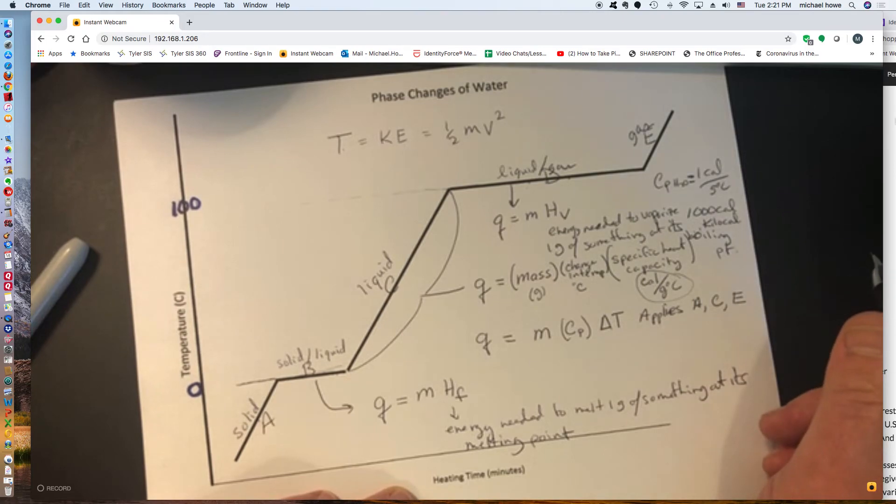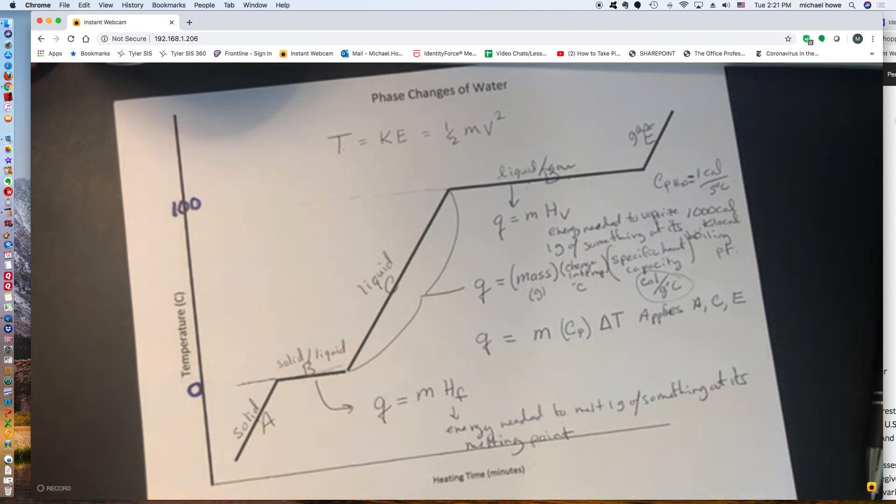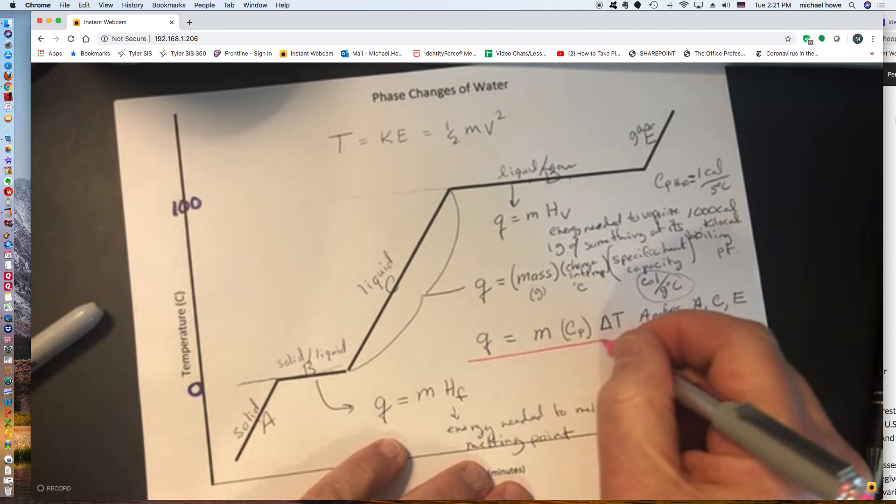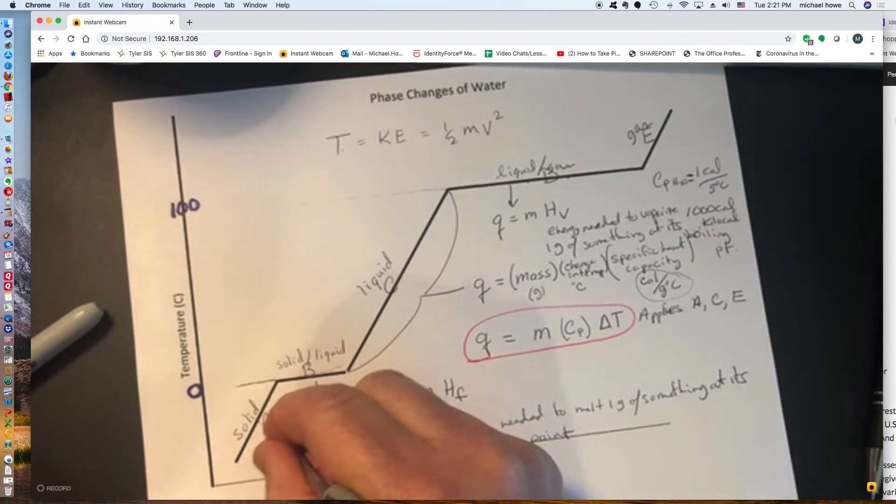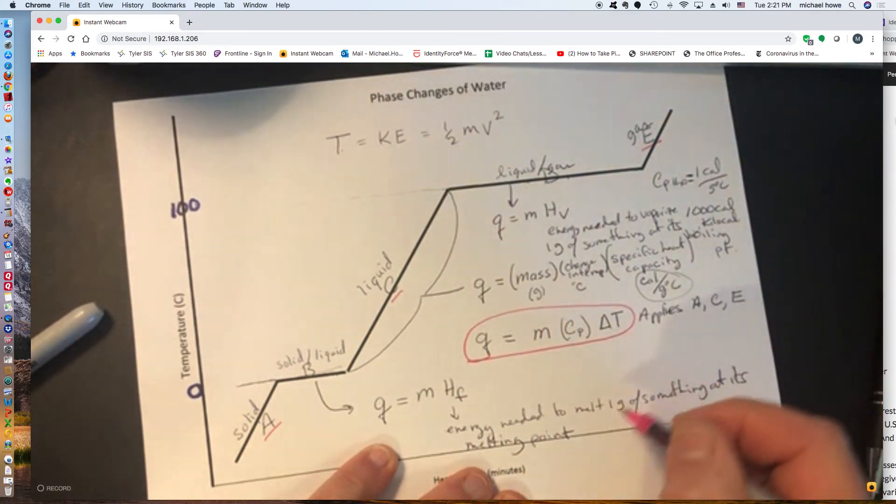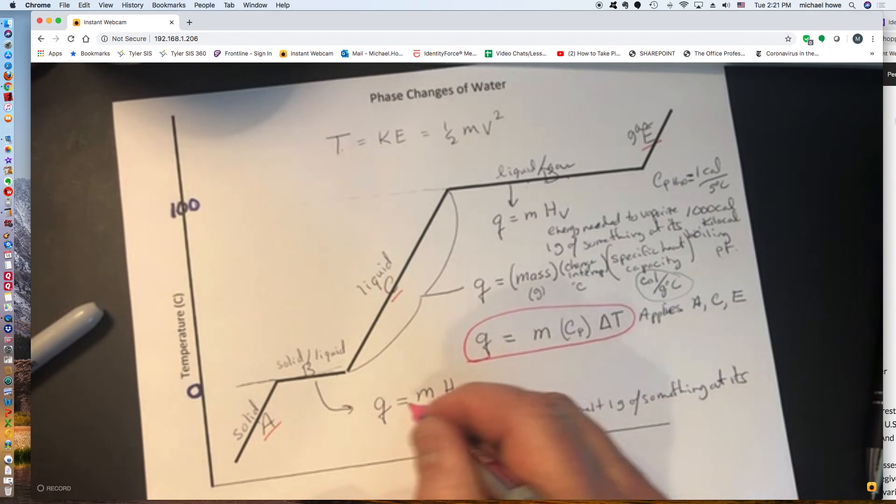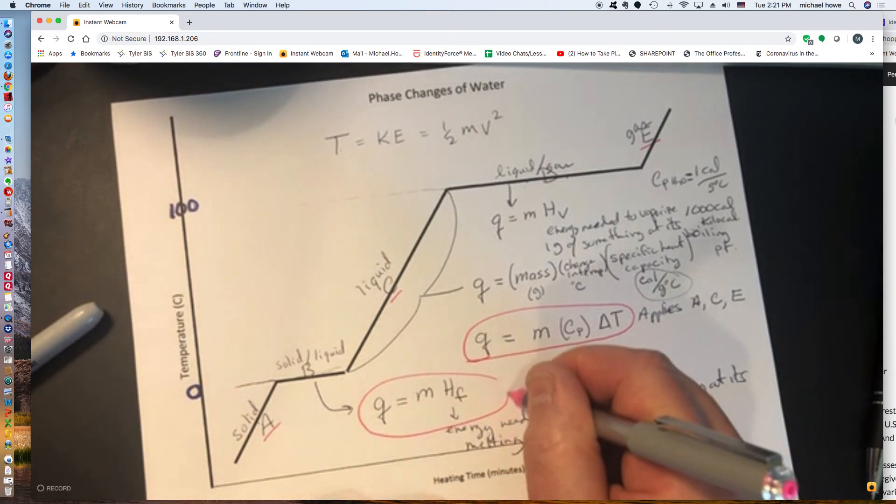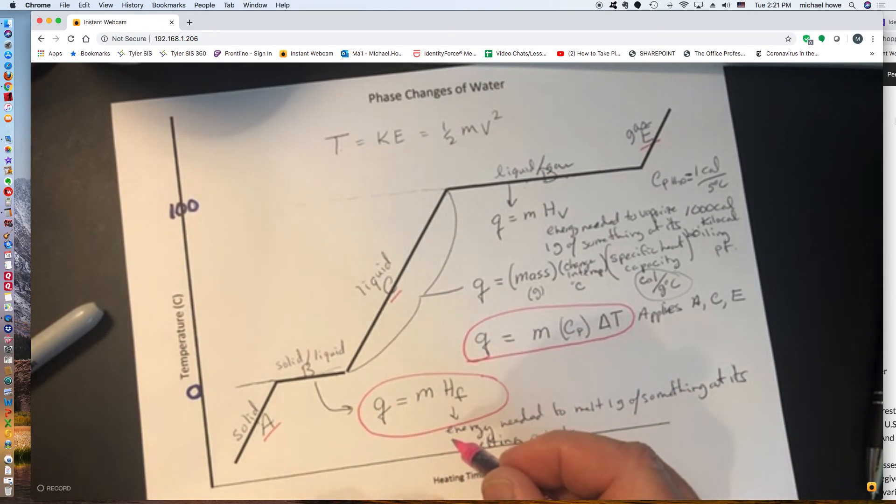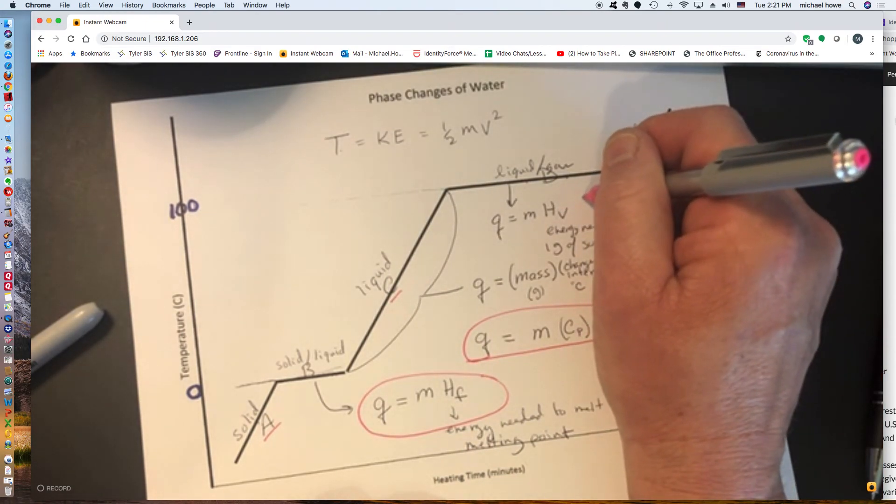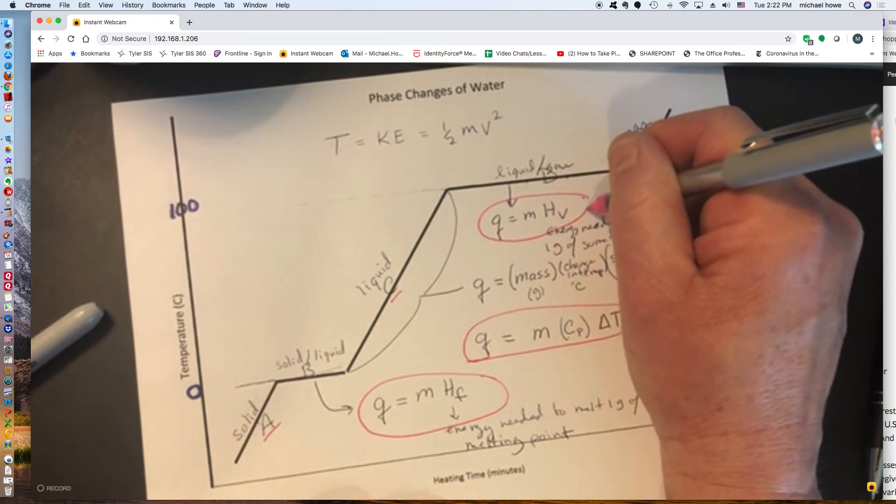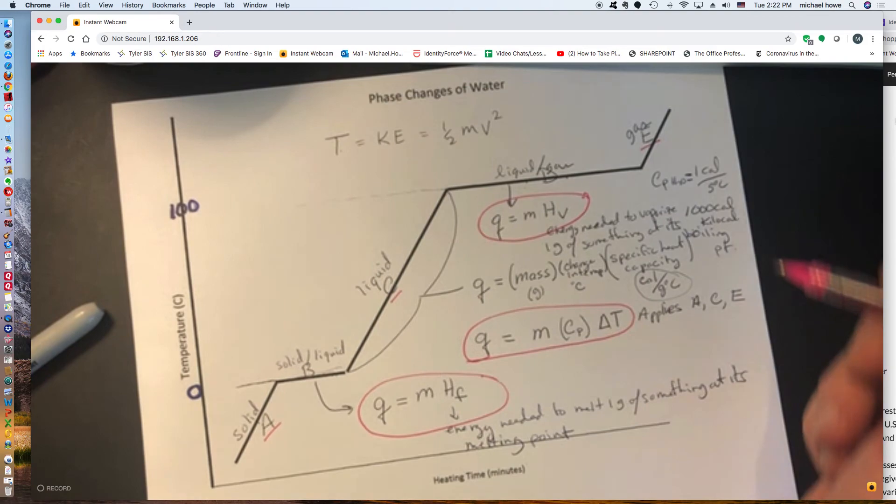All right, so we have three formulas that I've developed in this little video. The first formula represents energy change anytime that temperature is changing, and that's this area. And it applied in region A and region C and region E. When you're melting, you're not changing temperature, but we're still putting energy in. The energy that's being put in is called the heat of fusion, and we quantify the energy needed to melt something by using this formula. The third formula was similar to the heat of fusion formula, except it uses something called heat of vaporization. It's the energy required to vaporize one gram of something at its boiling point.